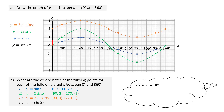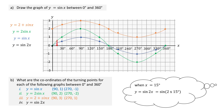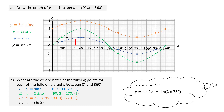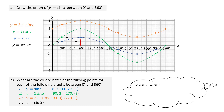Sketching y equals sine 2x. When x equals 0, sine 2x equals sine 0, which is the point (0, 0). When x equals 15, sine 2x is sine 30, which is the point (15, 0.5). When x is 45, sine 2x equals sine 90, which is the point (45, 1). When x equals 75, sine 2x is sine 150, which is the point (75, 0.5). When x equals 90, sine 2x is sine 180, which is the point (90, 0).